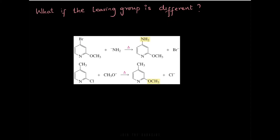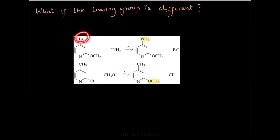What if the leaving groups are different? If pyridine has two leaving groups, which one is going to be replaced? That depends on the nature of the different leaving groups. Here we have a molecule with two leaving groups: bromine and OCH3. The one that is a weak base is going to be the better leaving group. So when there is a nucleophile, it will replace the bromine and not affect the OCH3 part of the molecule.